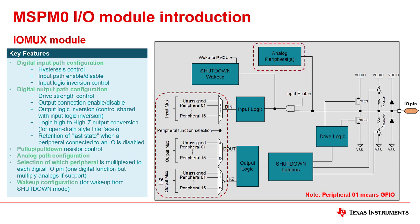I/O mux also supports analog functions. To enable an analog function, the user must disable the digital function in I/O mux, then enable the analog function in the appropriate analog peripheral.